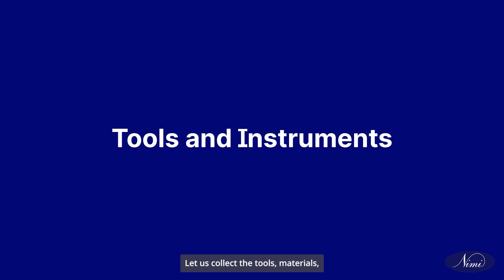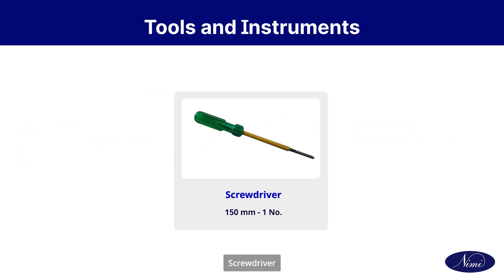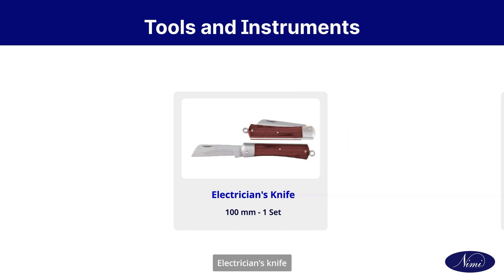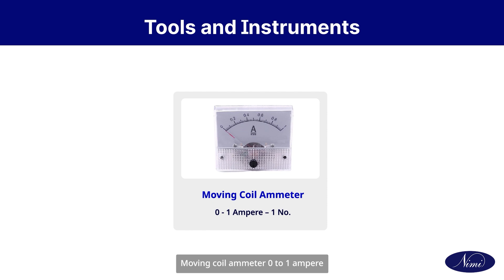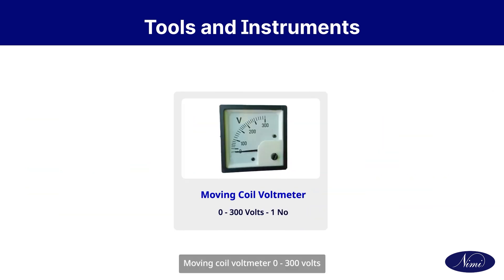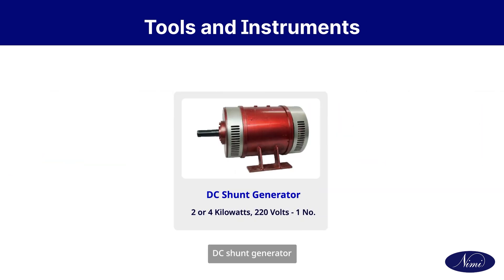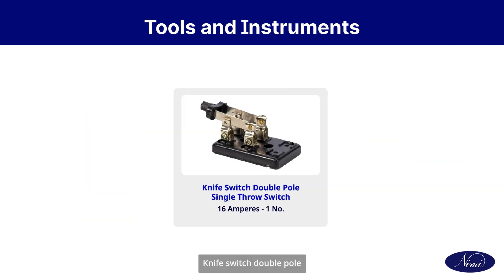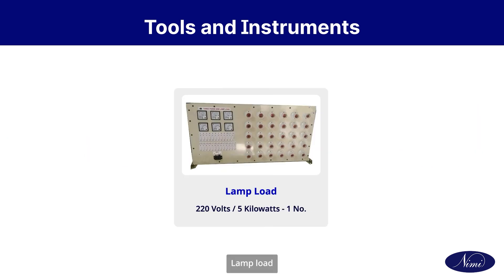Let us collect the tools, materials and machinery required to do this exercise: combination pliers, screwdriver, electrician's knife, tachometer, moving coil ammeter 0 to 1 ampere, moving coil voltmeter 0 to 300 volts, moving coil ammeter 0 to 20 ampere, DC shunt generator, rheostat, knife switch double pole, knife switch single pole, and lamp load.